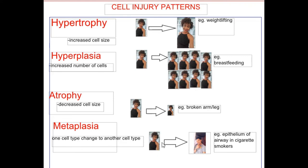An example of metaplasia is the epithelium of your airway in cigarette smoke — your epithelium changes from one type to the next. That's basically metaplasia, and that's all for Med in a Minute today, guys. Until next time, see you soon!